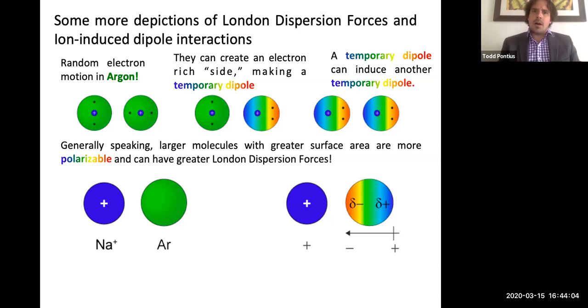So another type of temporary interaction is what's called an ion dipole interaction or an ion induced dipole. So down there we have, for example, sodium plus interacting with argon. Now that positive charge, what is the positive charge going to do with electron density? Well, that's right, it's going to attract it.